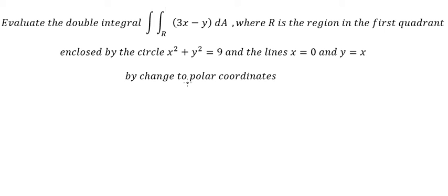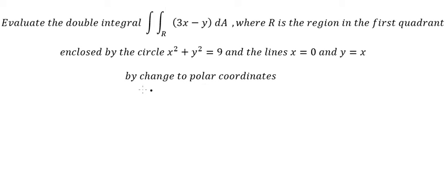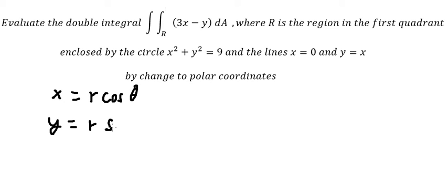We need to use polar coordinates. That means we have x, which we change to r cosine theta. y equals r sine theta. dy dx we need to change to r dr d theta.